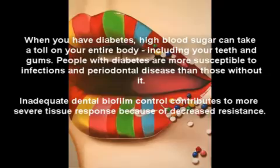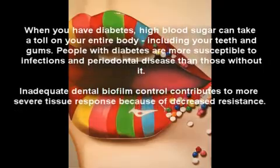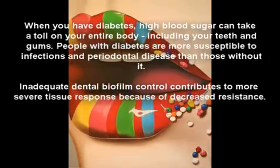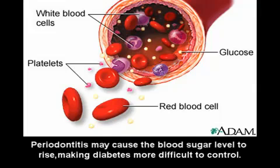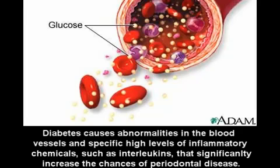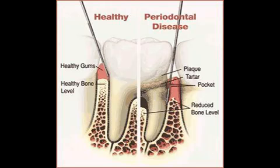Inadequate dental biofilm control contributes to more severe tissue response because of decreased resistance. Periodontitis may cause blood sugar levels to rise, making diabetes more difficult to control. Diabetes causes abnormalities in the blood vessels and specific high levels of inflammatory chemicals such as interleukins that significantly increase the chances of periodontal disease.